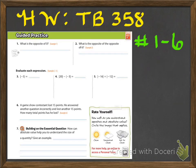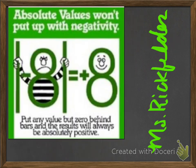Your homework for this evening is to work on textbook page 358, numbers one through six. This homework should be able to be done in a jiffy. My last little meme for you says: absolute values won't put up with negativity — put any value but zero behind bars, and the result will always be absolutely positive. Hopefully you can remember that when working on absolute value. Thank you.